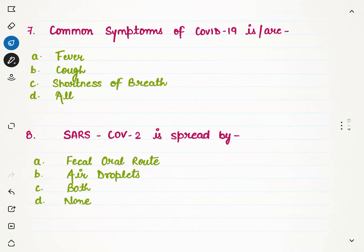The next question is: what are the common symptoms of COVID-19? Fever comes, yes. Cough also comes. Shortness of breath, meaning a problem in the respiratory system — difficulty in breathing. So option D is correct, as all options apply.